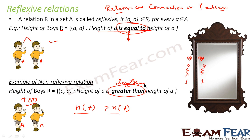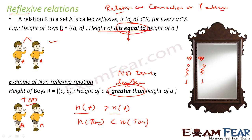Similarly, a less-than relationship is also non-reflexive, because 'height of Tom is less than height of Tom' is not possible. Likewise, 'height of Tom is not equal to height of Tom' is also not reflexive. In general, the equal-to relationship is reflexive — height of Tom is equal to height of Tom.